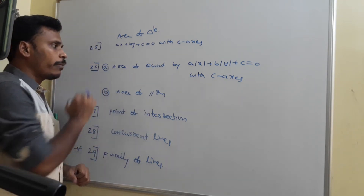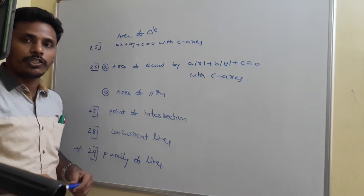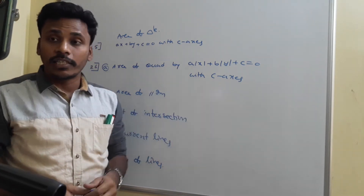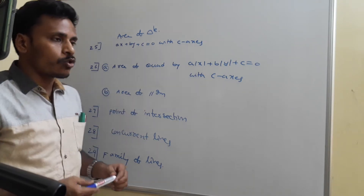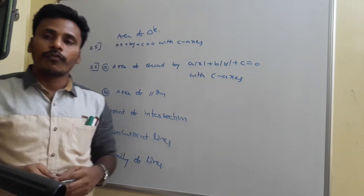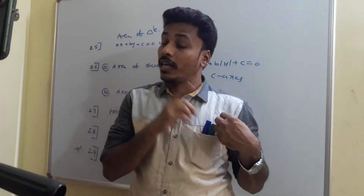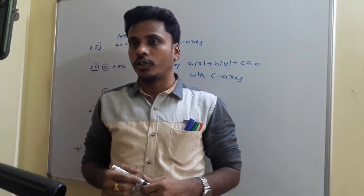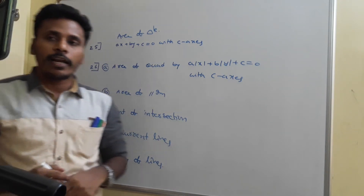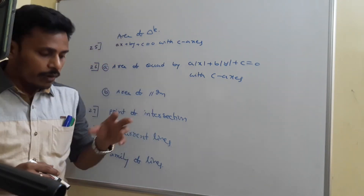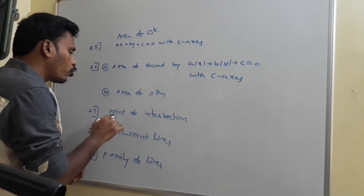The 26th point: area of the quadrilateral formed by a mod x plus b mod y plus c equals 0 with the coordinate axis, given as 2c squared by mod a. We also discussed the area of the parallelogram, where the lines are of the format a1x plus b1y plus c1 equals 0 and a1x plus b1y plus c2 equals 0 — two parallel lines. The area of the parallelogram is modulus of c1 minus c2 times d1 minus d2, divided by a1b2 minus a2b1.